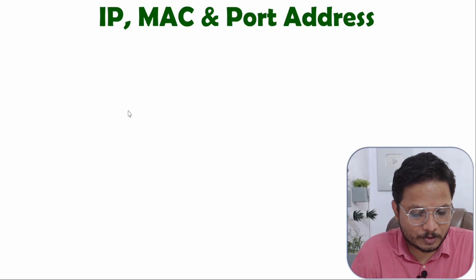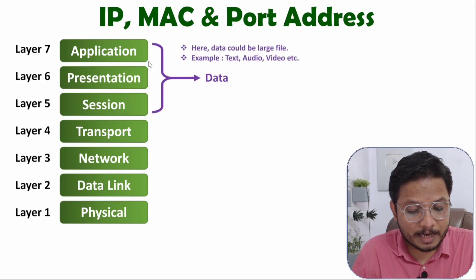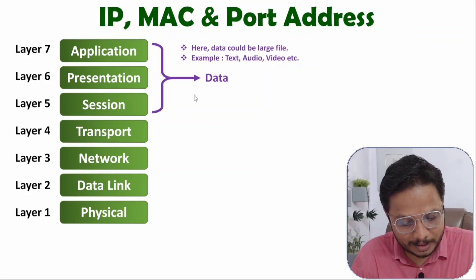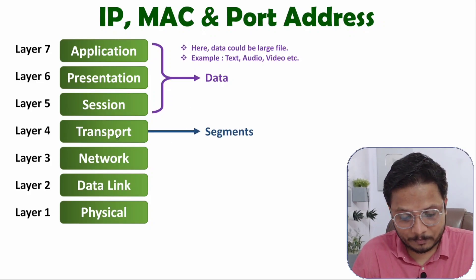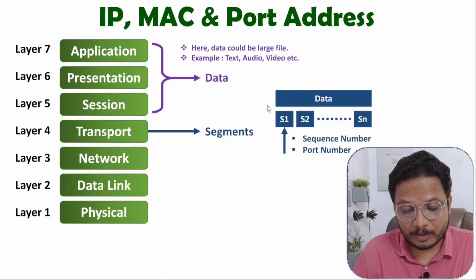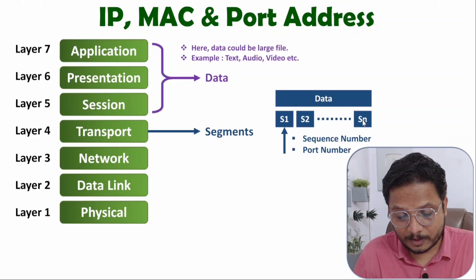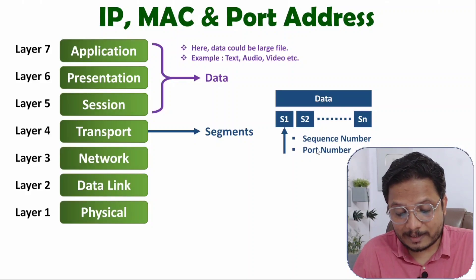Let me show you first how all these addresses are added in OSI layers. There are total seven layers in the OSI model. The first three layers give you data — it may be text, audio, or video — and the size of this data may be large. When you want to transmit data on a computer network, first we bisect this data into segments, and that segmentation happens at the transport layer.